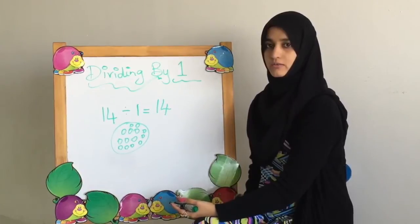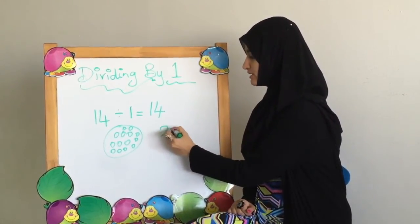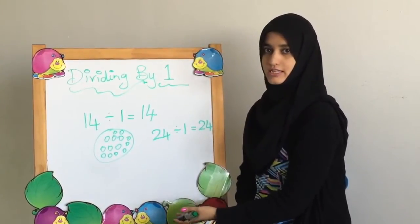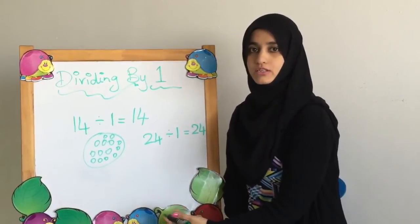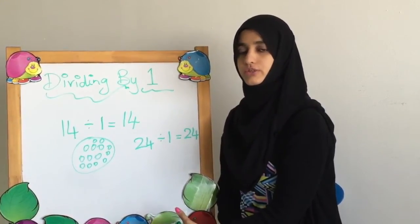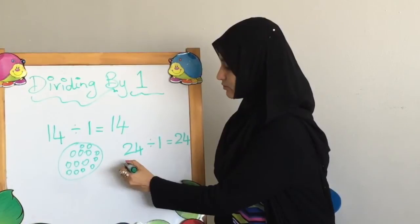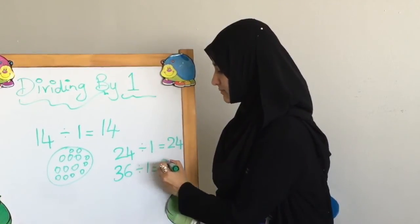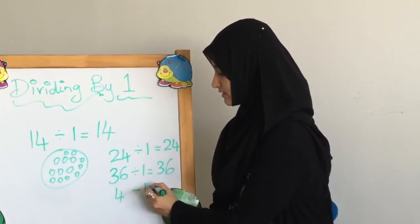When we are dividing numbers by 1, the answer is the same number. That is a pattern we can notice. If you divide 24 by 1, the answer is going to be 24, because there is only one set and all the numbers go within that set. For example, if you have 30 balls and you have to put them in one container, all 30 balls go in that container, so the container has 30 balls. As a rule and a pattern in math, whenever the divisor is 1, the answer is the same number — whether it is a big number or a small number. 4 divided by 1 will be 4.